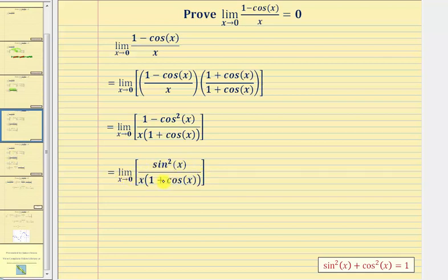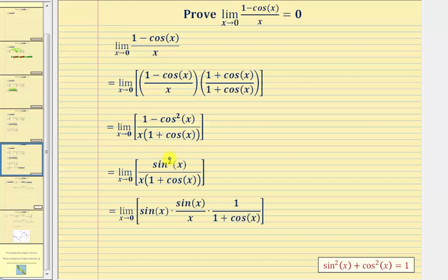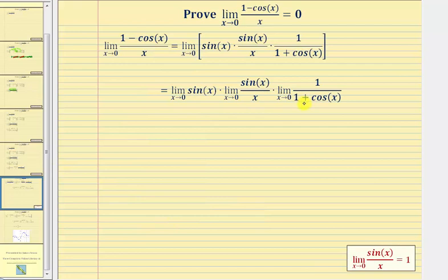Now we're going to break up this fraction into factors. This fraction is equal to sine x times sine x divided by x, times one over the quantity one plus cosine x. Notice how when we multiply these three fractions together, the numerator still has two factors of sine x, and the denominator still has a factor of x and a factor of one plus cosine x. The limit of this product equals the product of three limits.